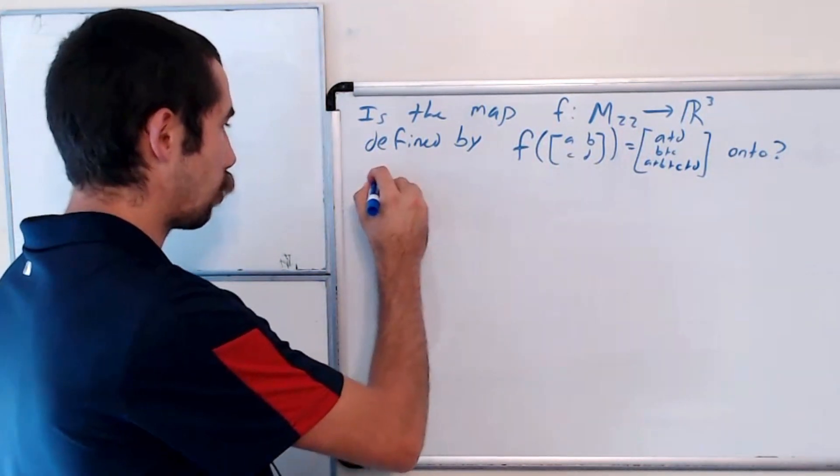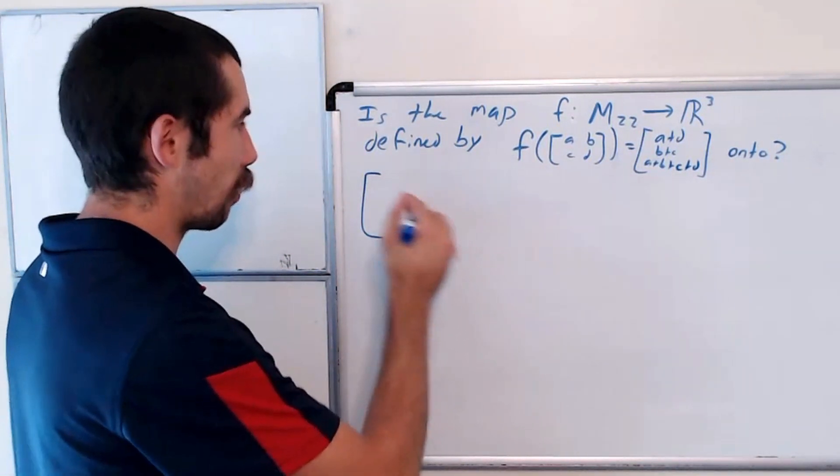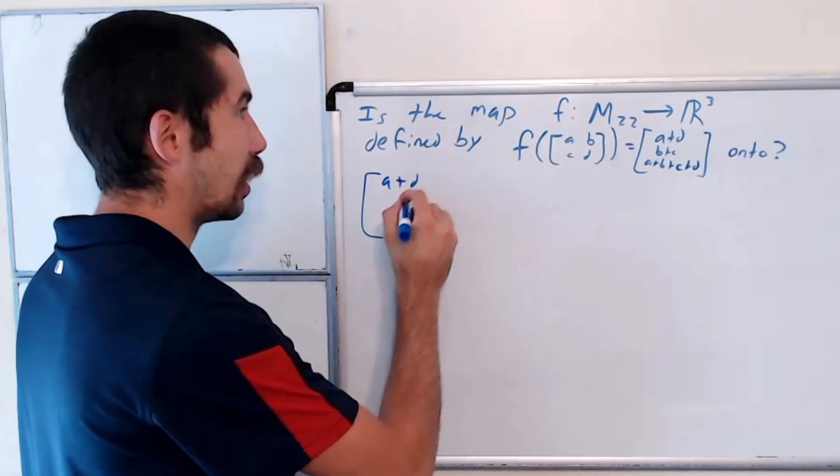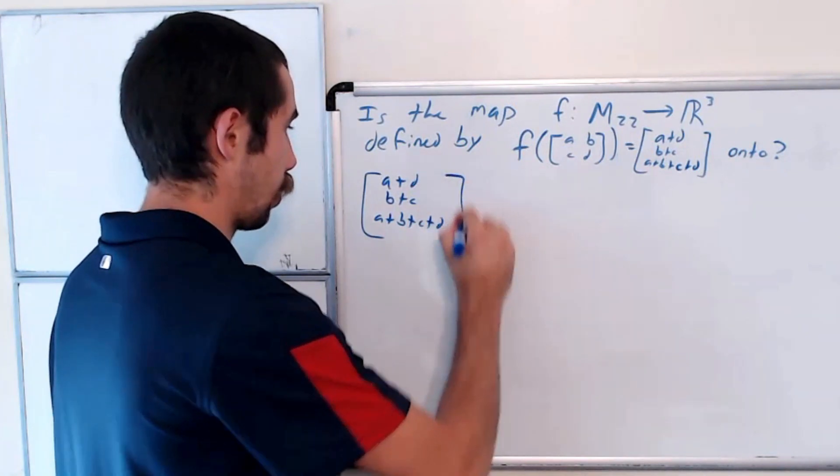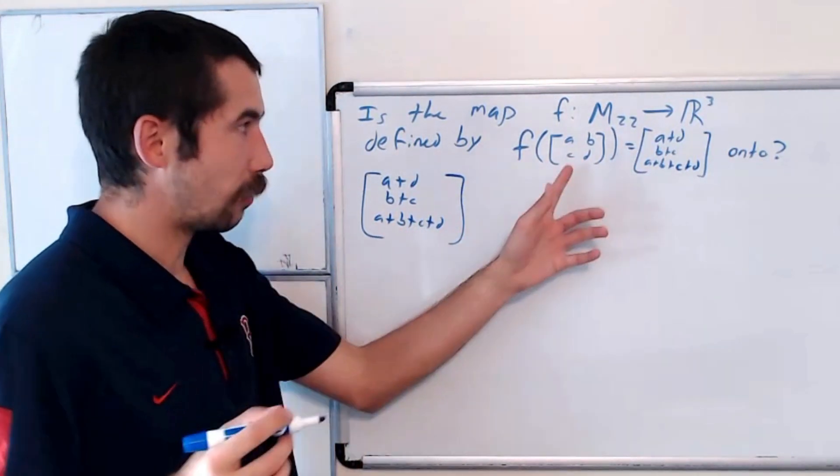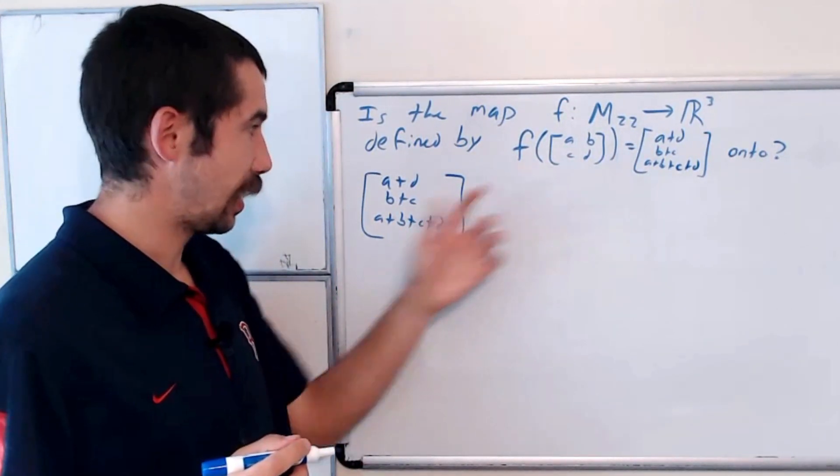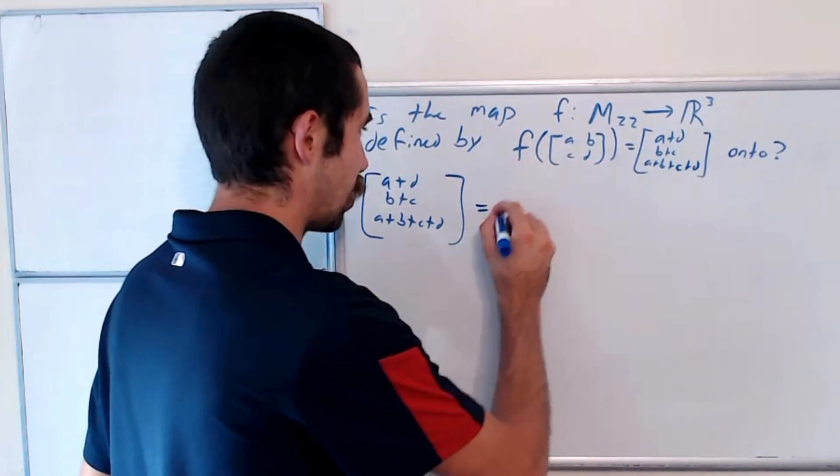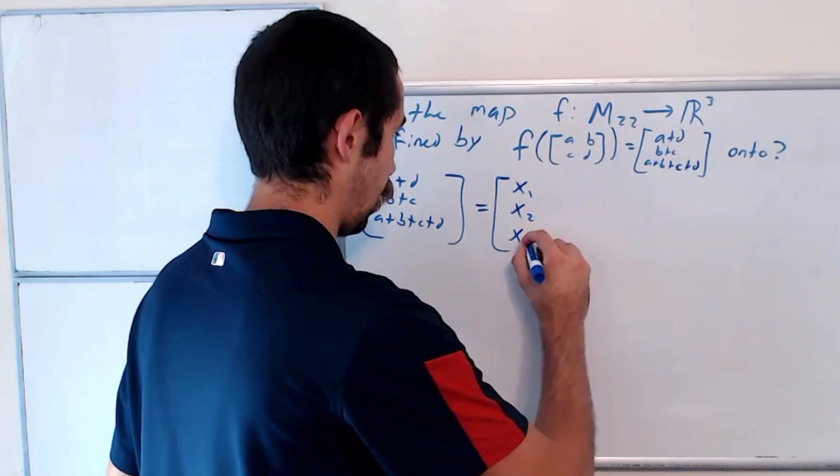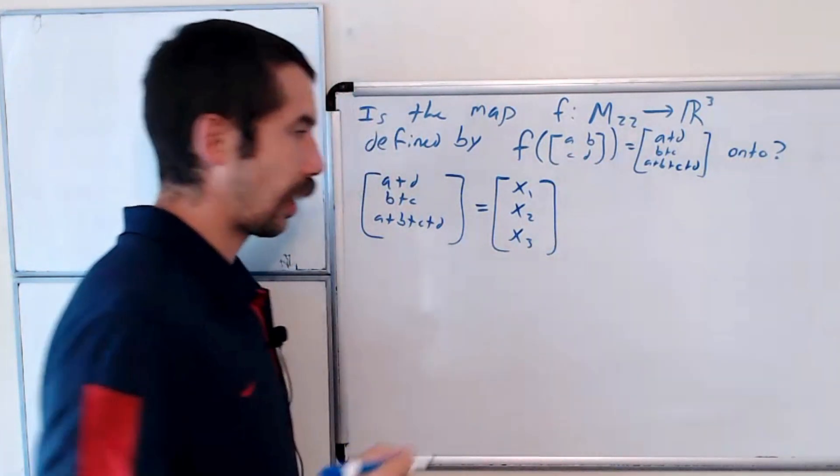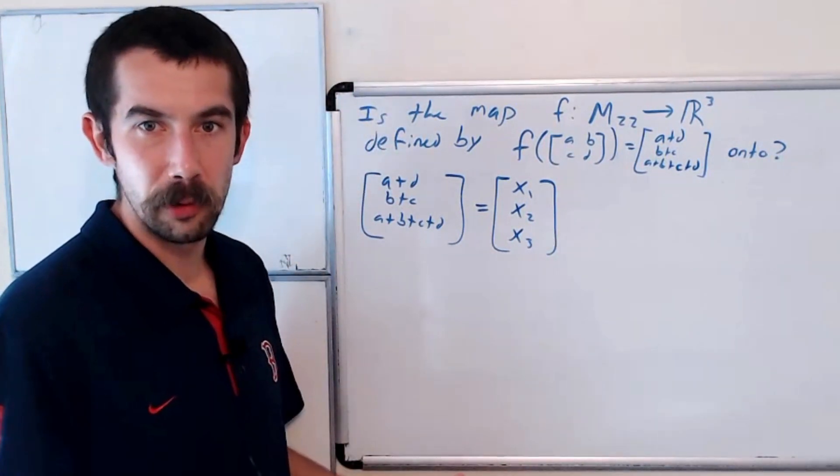So let's just see what it means for one of our vectors to be in the range. The image of the matrix ABCD is this vector. So let's just set it to some arbitrary vector in R3 and see what the system of equations tells us.